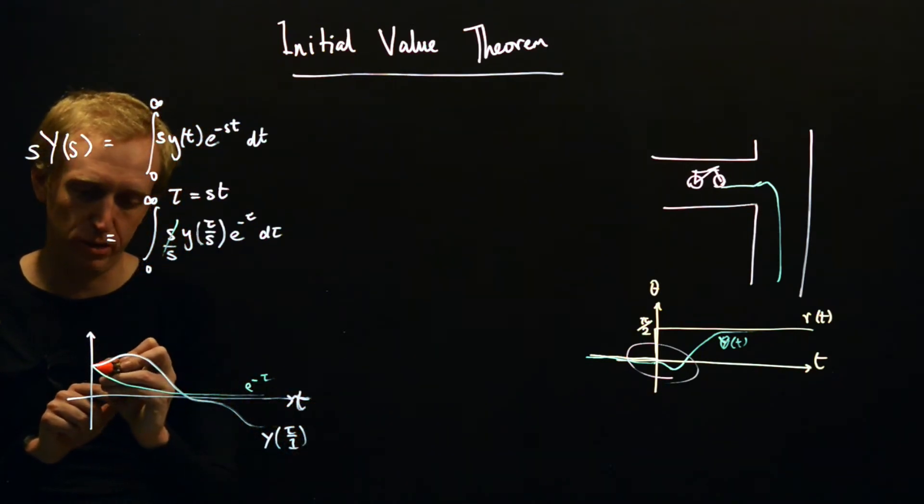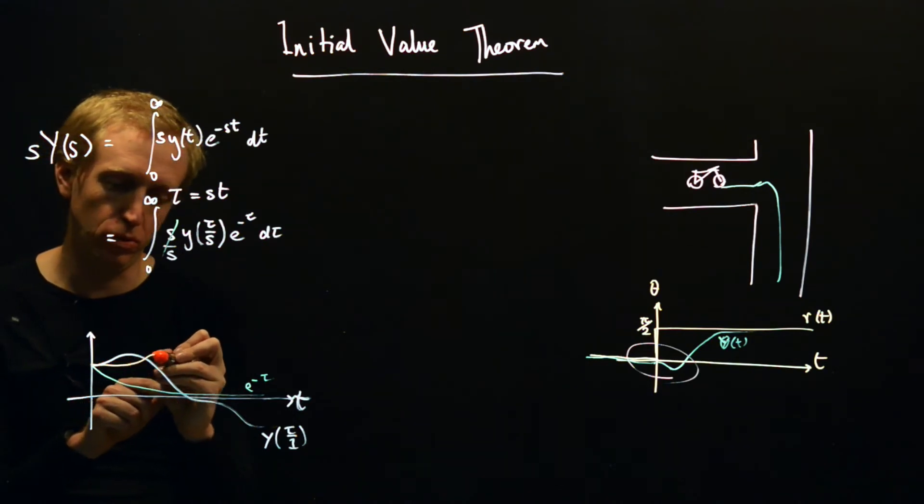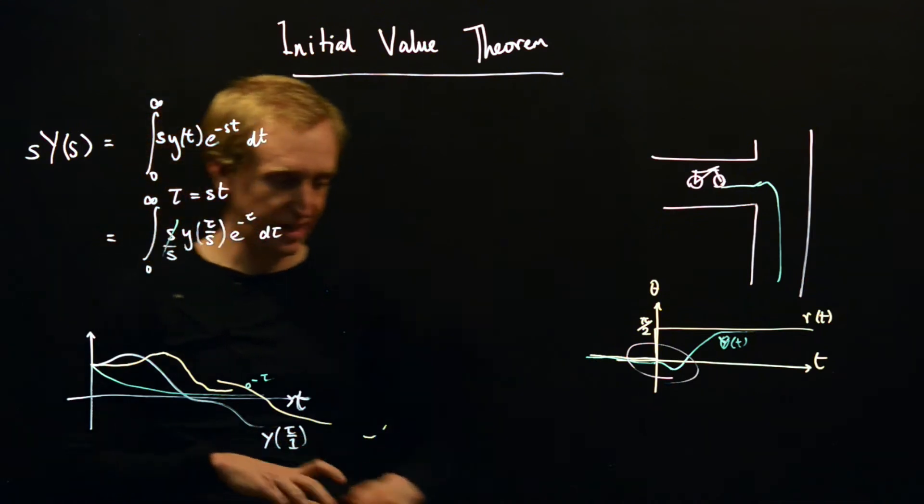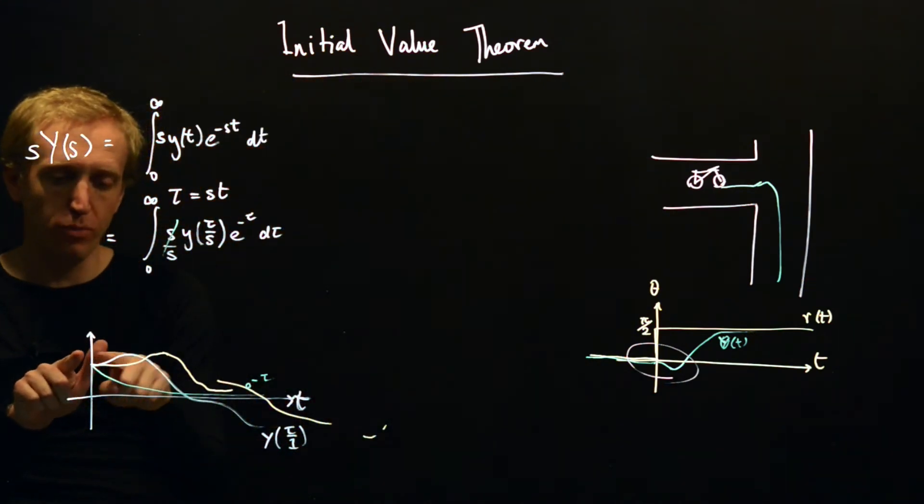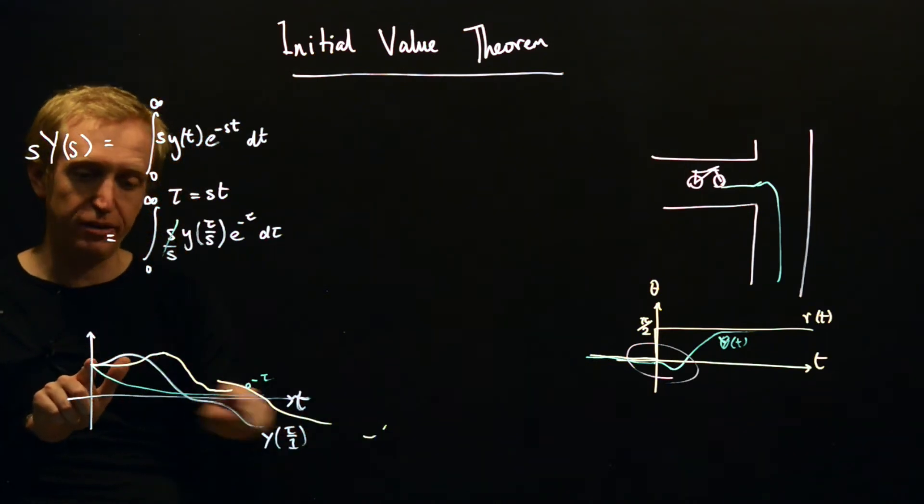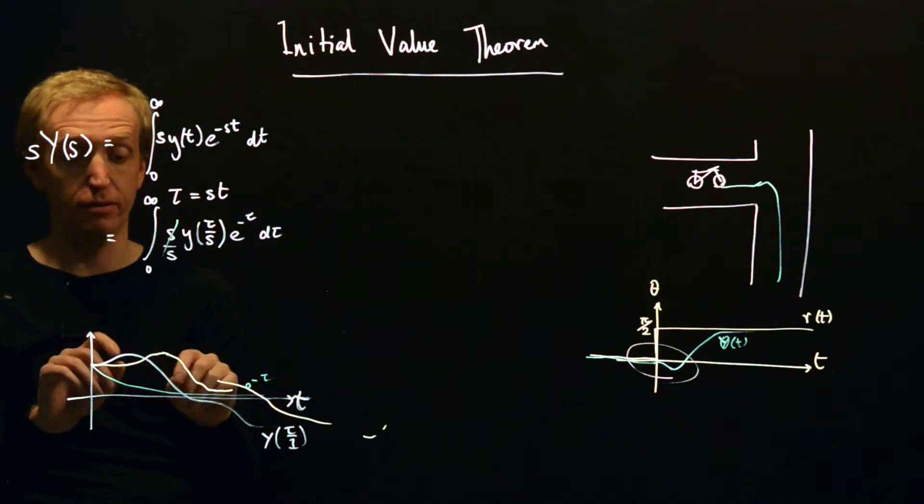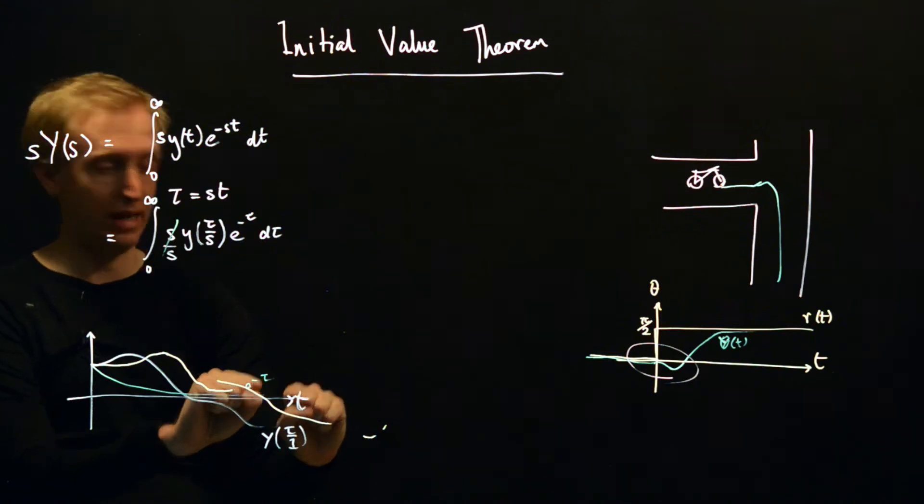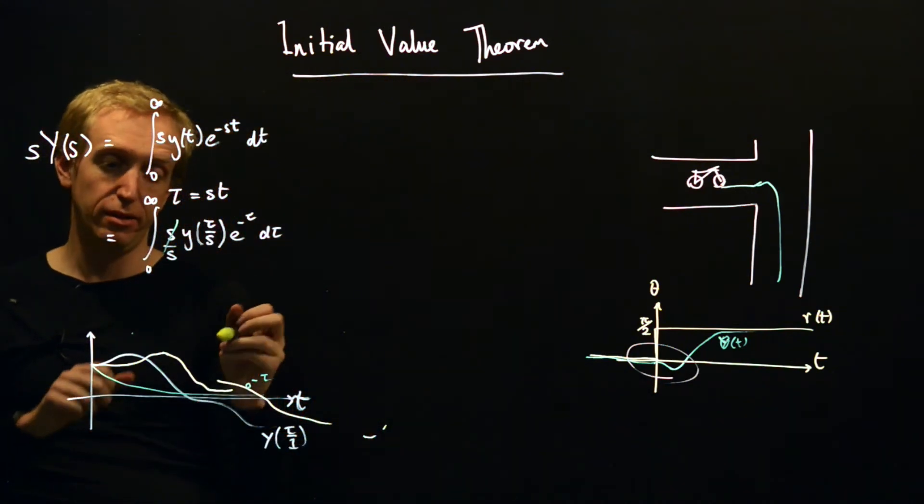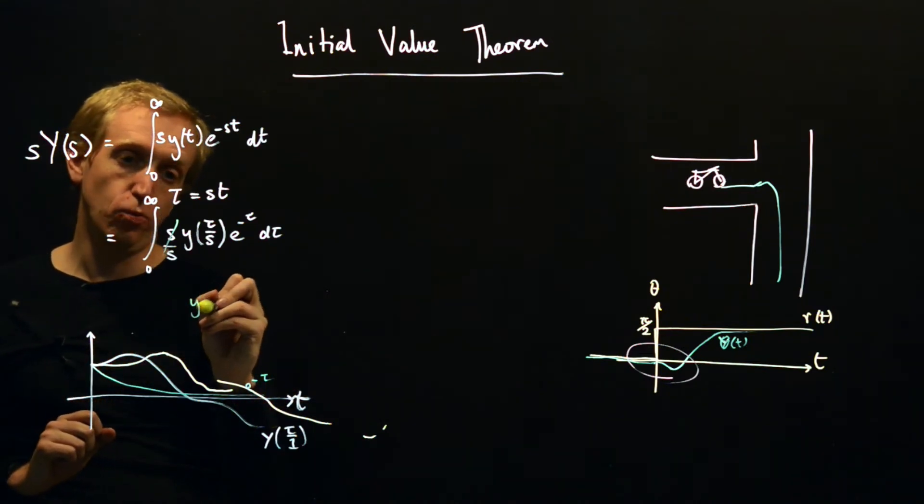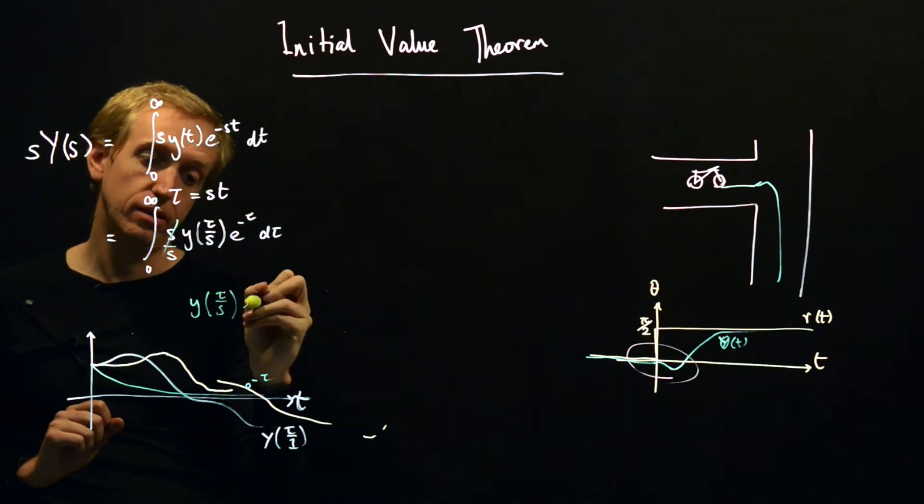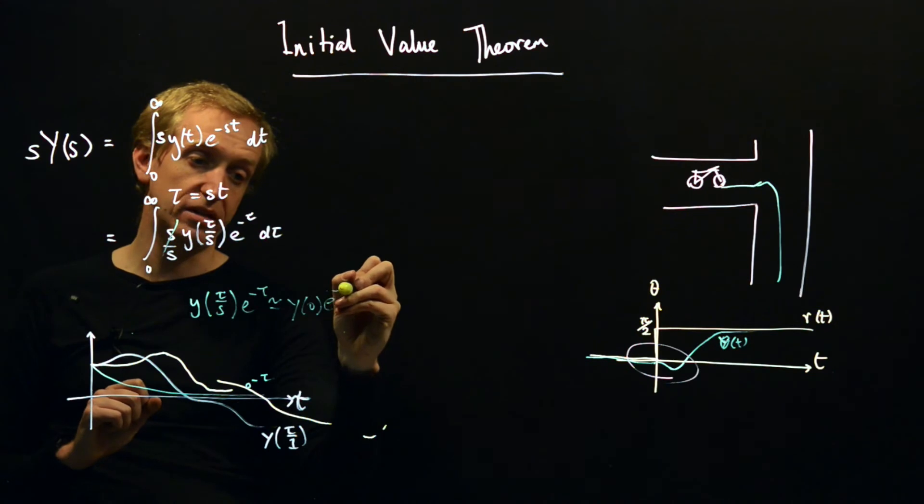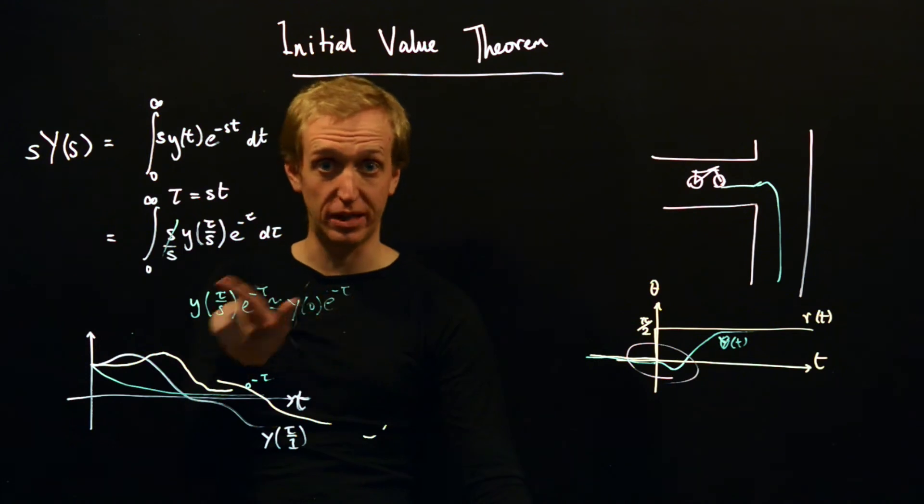So y(τ/1) looks like this, y(τ/2) looks maybe more like this and then all of that happens at much higher values of τ. The key thing to notice here is that we're getting more and more, it looks more and more like y(0) in this region where e^(-τ) is big. All of the other stuff is getting pushed to values where τ is large and the effect of multiplying it by e^(-τ) is for those values to get collapsed down. So the claim here is that as we make s very very large, y(τ/s)e^(-τ) is approximately equal to y(0)e^(-τ).